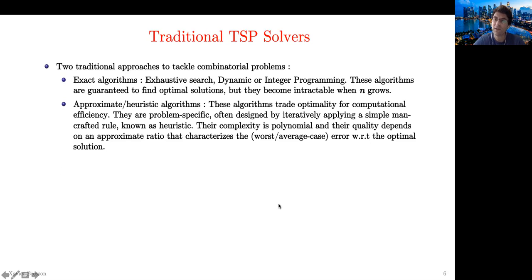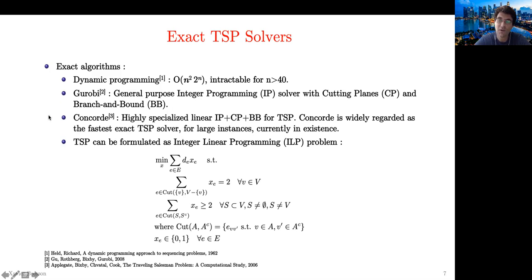TSP is a hard problem because exhaustive search is factorial time, but it is also the most popular and studied combinatorial problem, starting from 1951 with the mathematician von Neumann. There are two classes of traditional solvers: exact algorithms, where you get an exact solution, and approximate algorithms, where you trade exactness for speed. For exact algorithms, we have dynamic programming with exponential complexity, then Gurobi, a general-purpose integer programming solver, and Concorde, a specialized version of Gurobi for TSP—the fastest exact TSP solver in existence.